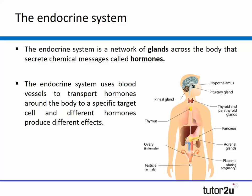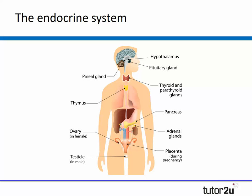Now unlike the nervous system, the endocrine system uses blood vessels to transport hormones around the body to a specific target cell, and different hormones have different effects. The word hormone actually comes from the Greek word 'hormeo' which just means 'excite', as hormones excite or stimulate part of the human body. It is worth noting that some glands produce multiple different hormones, and in this video we are going to focus on the main hormones released by the major glands in the human body.